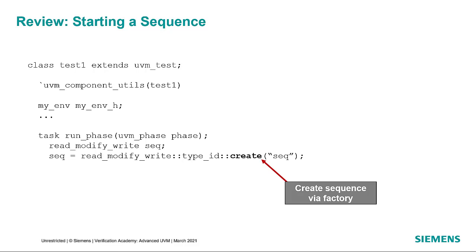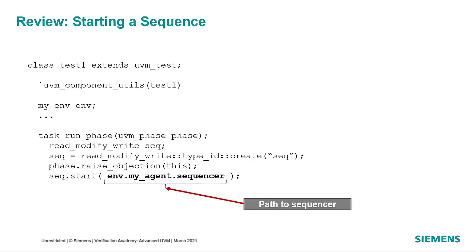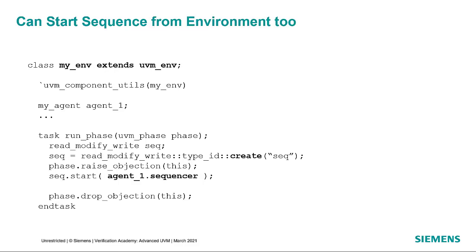Sequences are usually started in the run phase of the test. Before we can start it, we create it from the factory — this allows additional test extensions to override the type of sequence generated. After raising the phase objection, we call sequence.start, which is a blocking call and won't return until the sequence completes its execution. The argument to the start call is the path to the sequencer on which we want to execute the sequence. From the test, the path is typically environment.agent.sequencer.